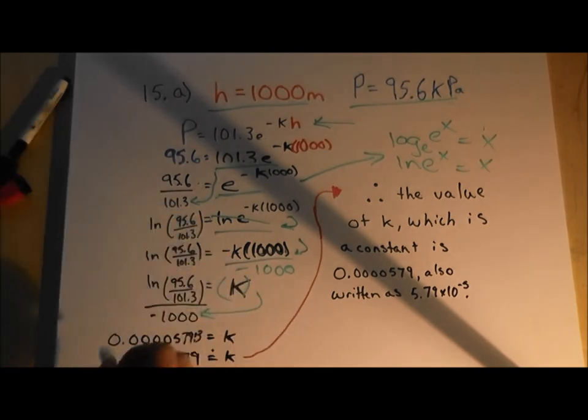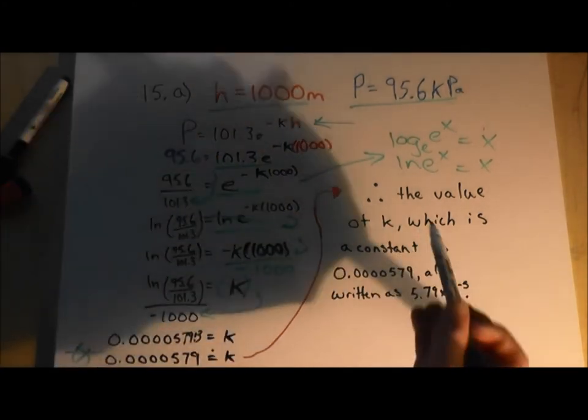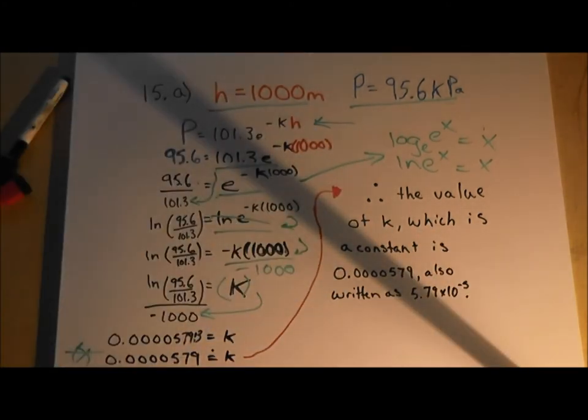By isolating for k, we have thus, therefore, solved for k. We then conclude this question with a therefore statement. Therefore, the value of k, which is a constant, is 5.79 times 10 to the negative 5.